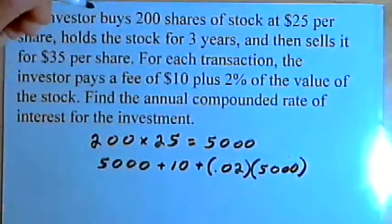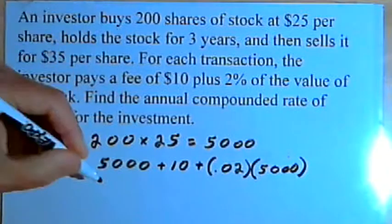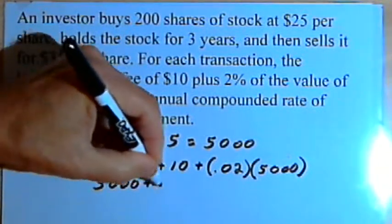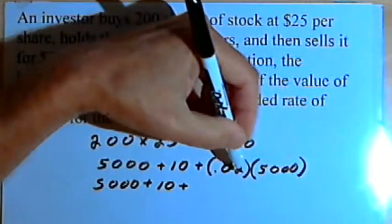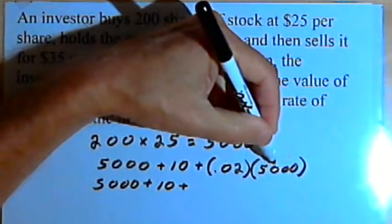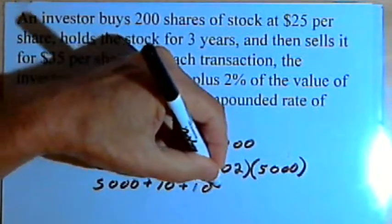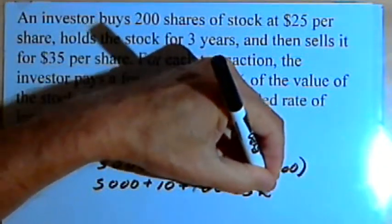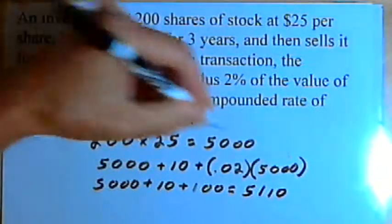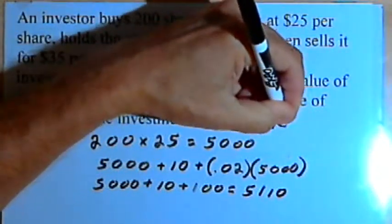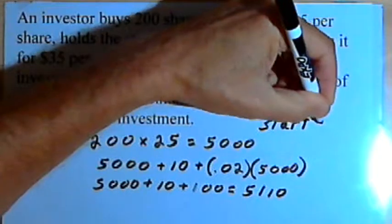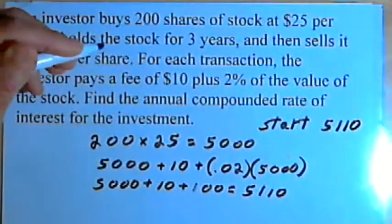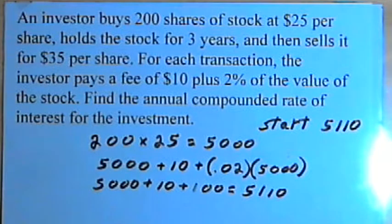So let's find out how much he actually paid. He paid $5,000 plus $10 plus 0.02 times $5,000, which is $100. We add those together and we get $5,110. So let's just say that at the start of the problem, the whole cost was $5,110.